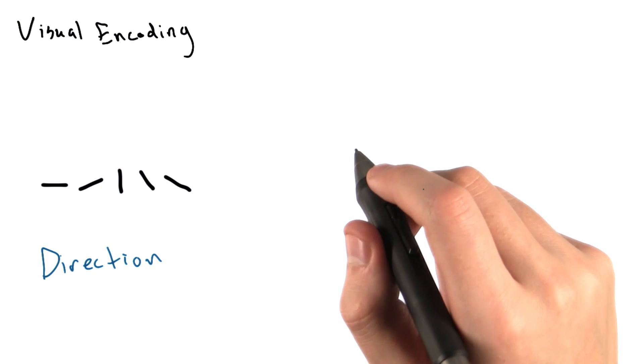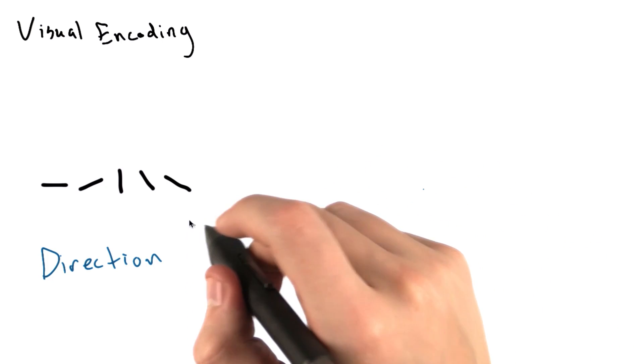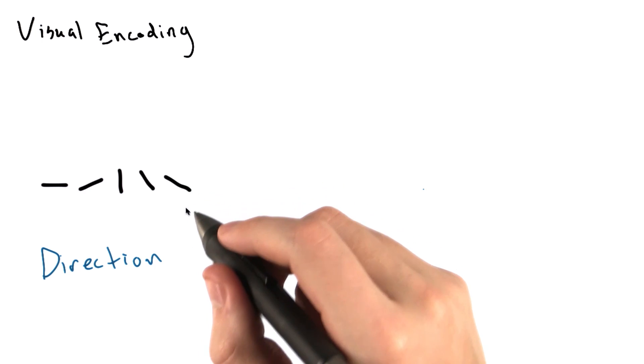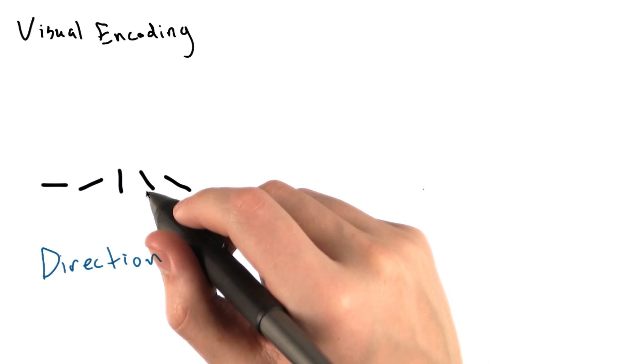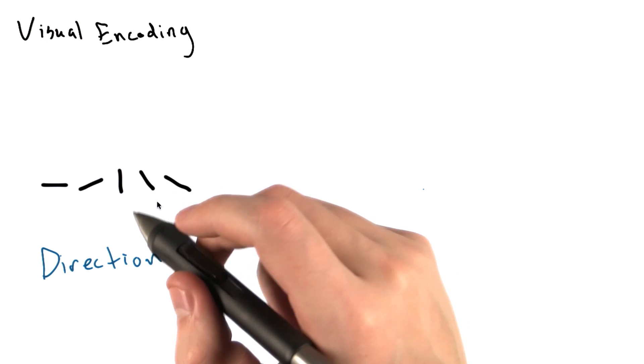Let's discuss a few more visual cues. The first of which is direction. Direction is similar to angle, but the direction in coding relies on a single vector's orientation in a coordinate system.